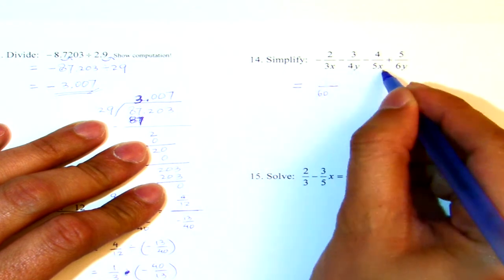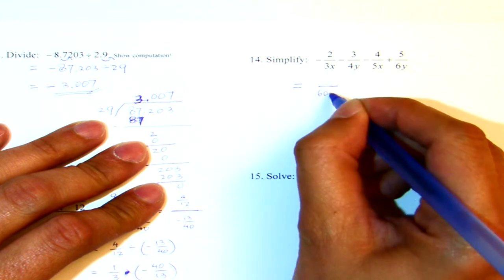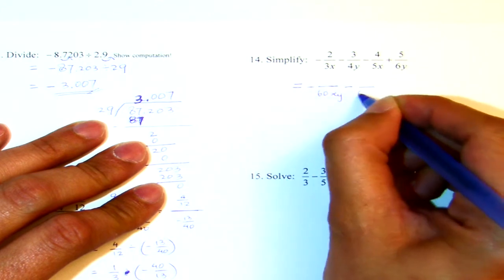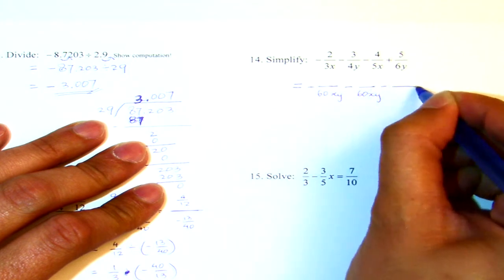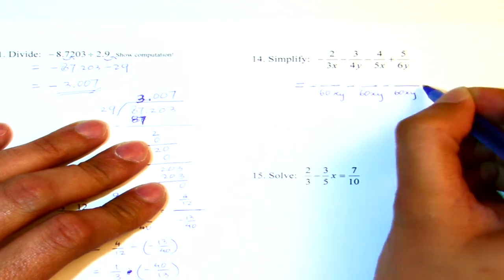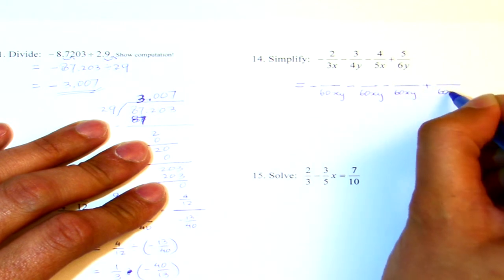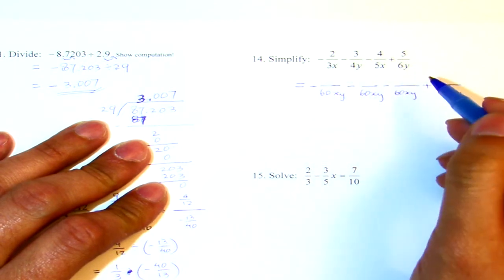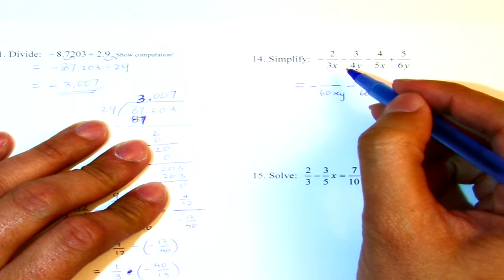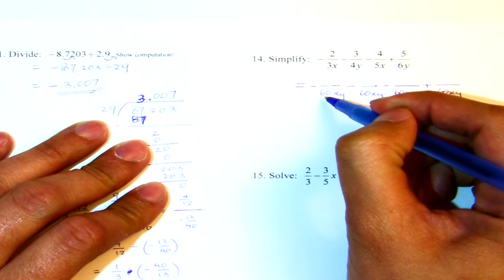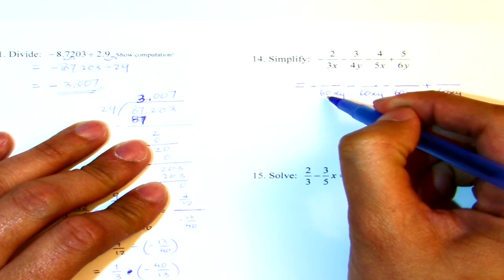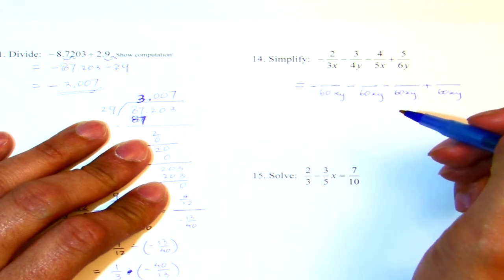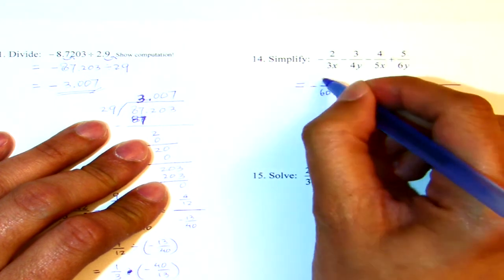Now for the variable, we choose the highest exponent for each one of them, basically we get 60xy. And then from here we will adjust each fraction to get the equivalent fractions. 3x times what gives me 60xy? I will multiply by 20y. Now 20y times 2 gives me 40y.